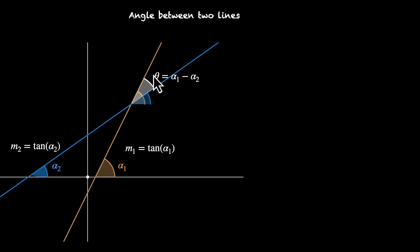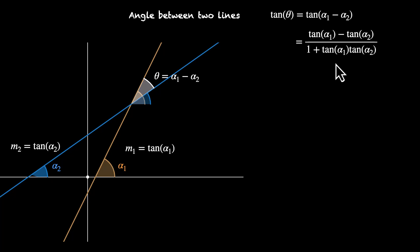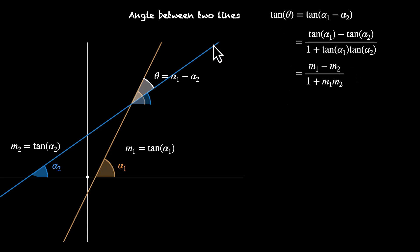Let's try finding the value of this angle in terms of M1 and M2. We have tan of theta, that's tan of alpha one minus alpha two, and here we can use the tan(A minus B) identity: tan(A minus B) equals tan A minus tan B divided by one plus tan A tan B. Plugging in the values of tan alpha one and tan alpha two as M1 and M2, we get M1 minus M2 divided by one plus M1 M2. This is the formula for the angle between the two lines — technically the formula for the tangent of that angle, but if you know the tan, you can figure out the angle.